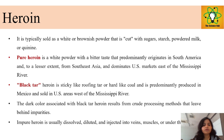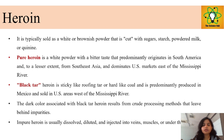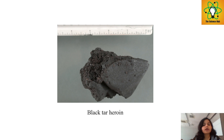Black tar heroin is sticky, hard, and dark, and is found and sold in the U.S. The dark color associated with black tar heroin results from a crude processing method that leaves impurities. Impure heroin is usually dissolved, diluted, and injected into the vein, muscle, or under the skin. Here is a photograph of black tar heroin.